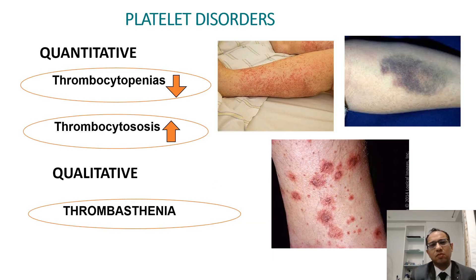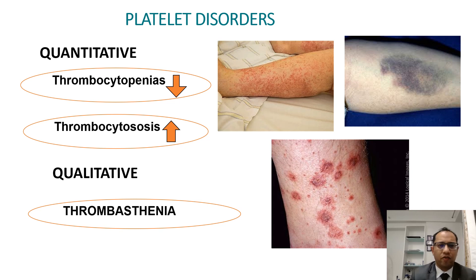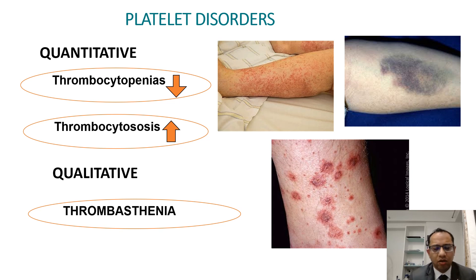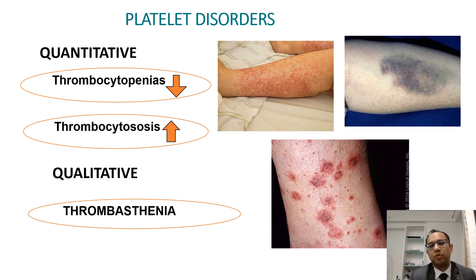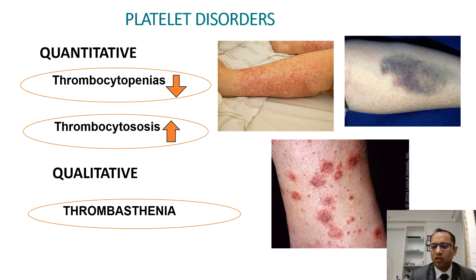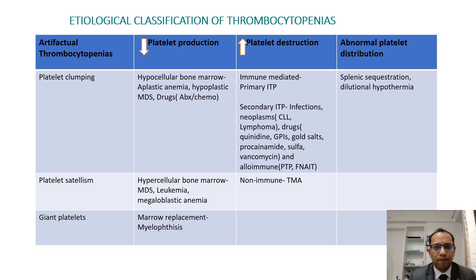When discussing platelet disorders, we should remember there can be a quantitative defect or a qualitative defect. Qualitative defects include Glanzmann's thrombasthenia and other platelet function defects. Quantitative defects include thrombocytopenia, when there is a decrease in platelet count, and thrombocytosis, when there is an increase.